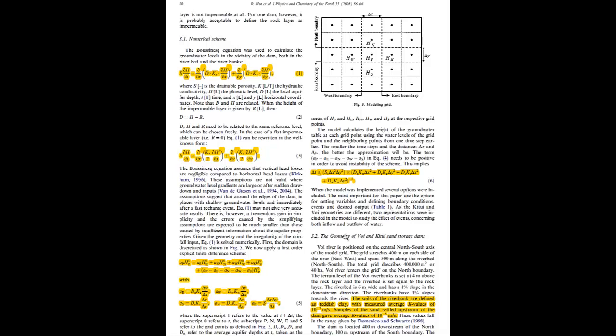A little bit hidden but very important, they talk about the geometry and boundary conditions. The soils of the river banks are defined as reddish clay with average k values of 10 to the minus 7 meters per second. Samples of the sand settled upstream of the dam gave an average k value of 10 to the minus 5. The conductivity of the sand behind the dam is high, and the conductivity of the banks is a hundred times lower. Movement through the sand goes really fast, but into the banks it's a slow process.